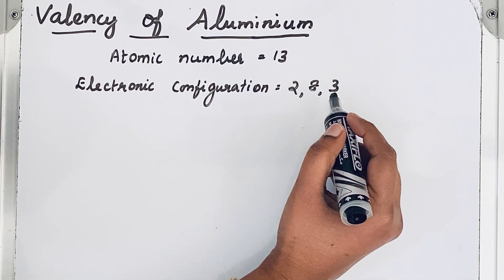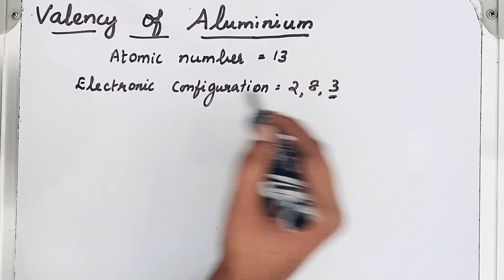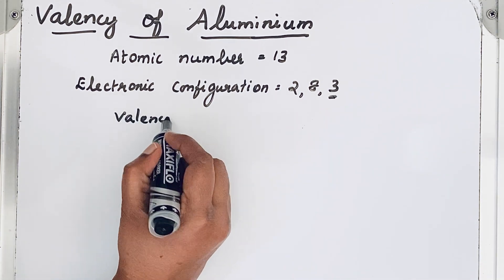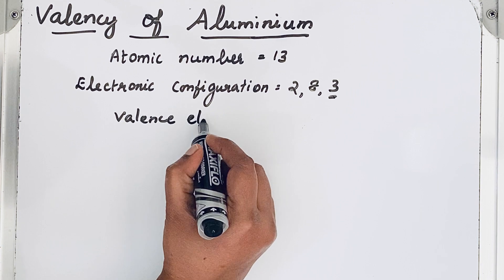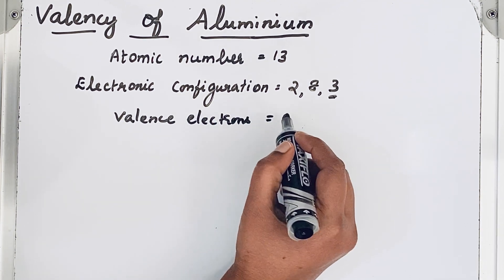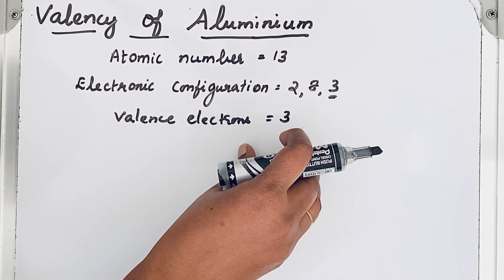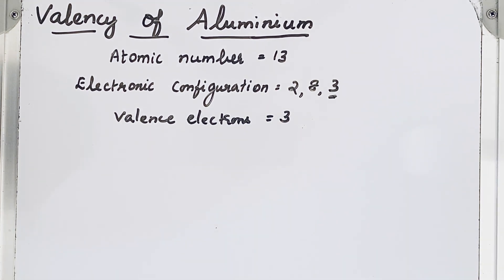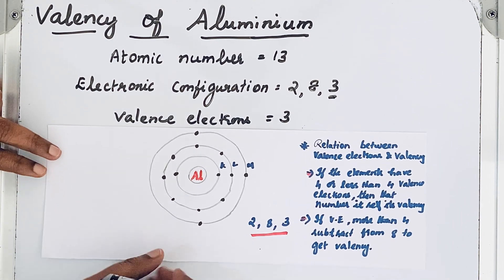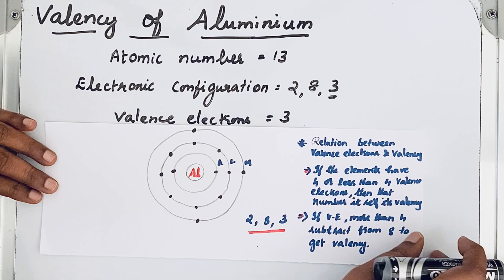The electrons present in the outermost shell are called valence electrons. So how many valence electrons are present? There are three valence electrons. These valence electrons give the idea of combining capacity. To know better, let us see the schematic diagram of electron arrangement in aluminium.